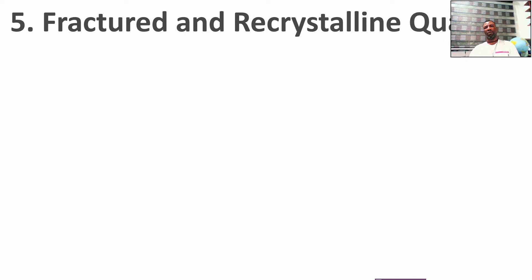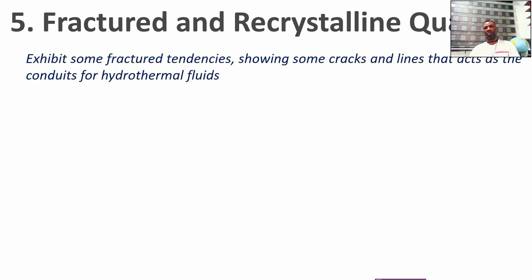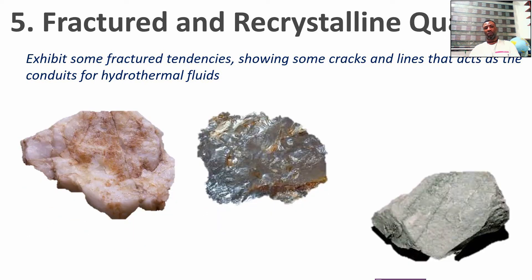The fifth variety is fractured or brecciated quartz. During field work, we find some of these quartz are crushed and exhibit cracks. Importantly, these cracks form conduits for hydrothermal fluids when they settle. Most quartz that are cracked or jointed are good indicators. You can see from the lines the cracked nature of the quartz.